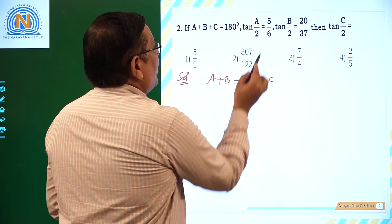All of them have tan, so let us apply tan on both sides. That gives tan(A/2 + B/2), which is tan(A/2) plus tan(B/2) divided by 1 minus tan(A/2) tan(B/2), equals tan(90 degrees minus C/2), which is cot(C/2). So cot(C/2) value is given by substituting tan(A/2) equals 5/6 and tan(B/2) equals 20/37.